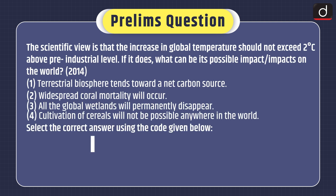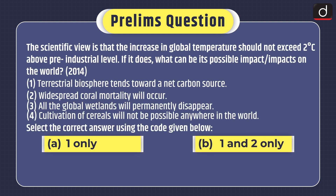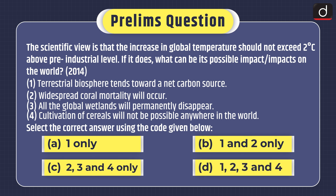Now it's time for practice questions. Note down this prelims question asked in the 2014 exam: 'The scientific view is that the increase in global temperature should not exceed 2 degrees Celsius above pre-industrial level. If it does, what could be its possible impact on the world? 1. Terrestrial biosphere tends toward a net carbon source. 2. Widespread coral mortality will occur. 3. All the global wetlands will permanently disappear. 4. Cultivation of cereals will not be possible anywhere in the world.' Select the correct answer: 1 only; 1 and 2 only; 2, 3 and 4 only; or 1, 2, 3 and 4.